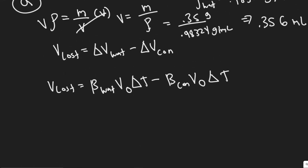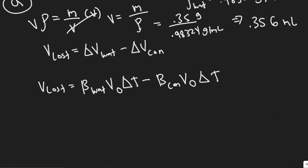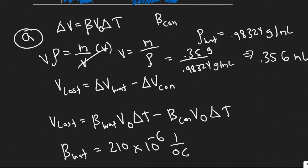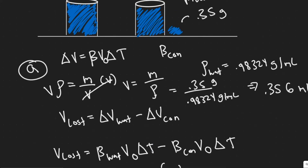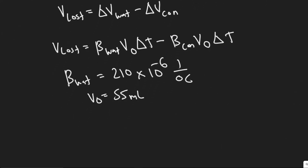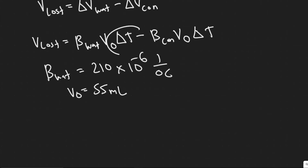We know that value, and we know beta for water — you can look it up in your textbook. The coefficient of volume expansion for water equals 210 times 10 to the minus 6 inverse degrees Celsius. We also know the initial volume of the water: they tell us it's 55 milliliters, so V0 equals 55 milliliters. We know the change in temperature too.